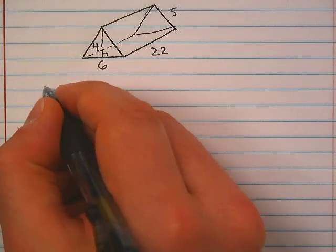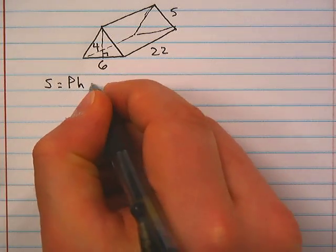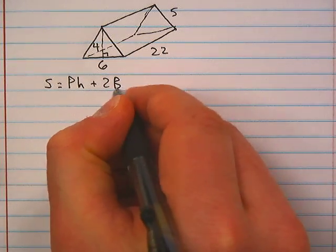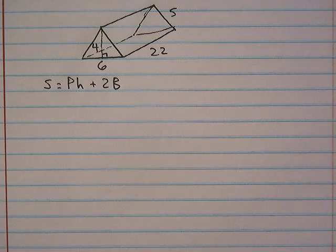So the formula for this is surface area S is equal to P times h plus two big B.